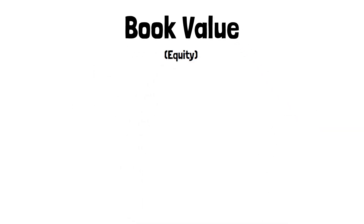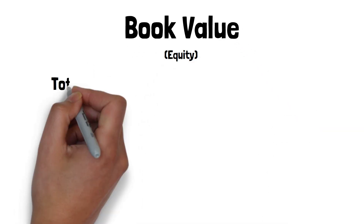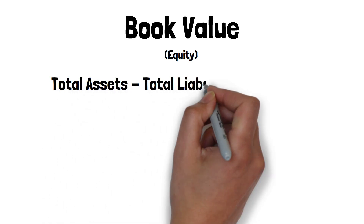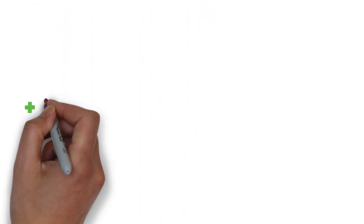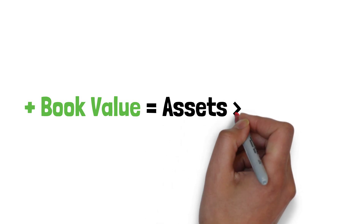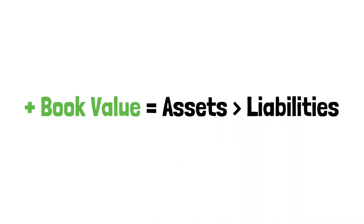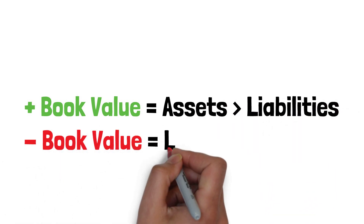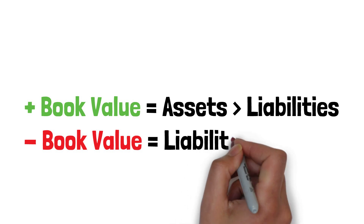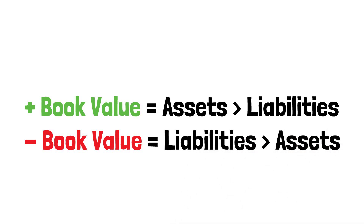The book value, or equity, of the company is simply what the company would be worth if it sold all of its assets and paid off all of its liabilities. A positive book value would mean the company has more assets than liabilities. A negative book value would mean the company has more liabilities than assets.